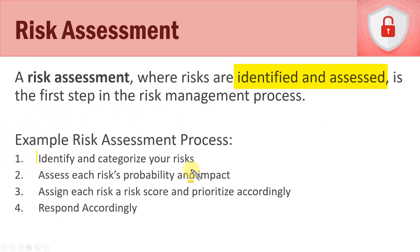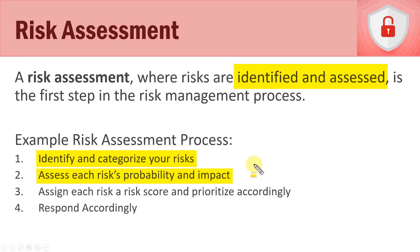In the risk assessment process, the first step is to identify and categorize risks. We can break them into categories — financial costs, availability issues such as a denial-of-service attack affecting customers, and so forth. Categories will differ for every organization. Once we identify and categorize risks into high-level categories, we assess them based on probability and impact, which we'll explore in a qualitative risk assessment.